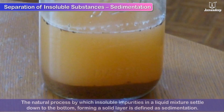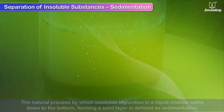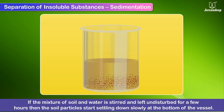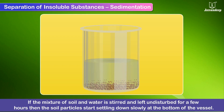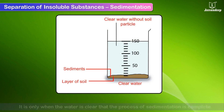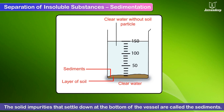Sedimentation: the natural process by which insoluble impurities in a liquid mixture settle down to the bottom forming a solid layer is defined as sedimentation. If a mixture of soil and water is stirred and left undisturbed for a few hours, the soil particles start settling down slowly at the bottom of the vessel. It is only when the water is clear that the process of sedimentation is complete. The solid impurities that settle down are called sediments.